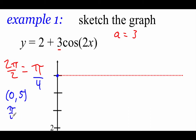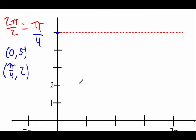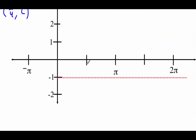Adding π/4 to 0 gives us x = π/4. Substituting: 2 times π/4 — the 2 cancels with the 4 — gives π/2. Cosine of π/2 is 0, times 3 is 0, plus 2 gives 2. So at x = π/4, we are up at 2.